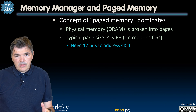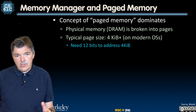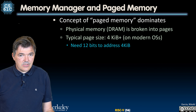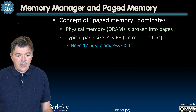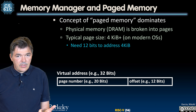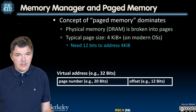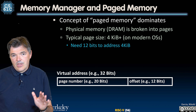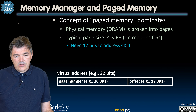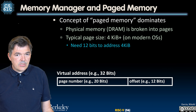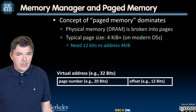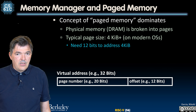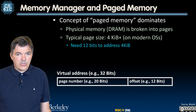Remember, RISC-V is a byte-addressable ISA, so every byte within the page should be addressable. How many bits do we need to address 4 kilobytes — 4096 bytes? We need 12 bits for that. So if you have a 32-bit address space, we split it into two parts in our virtual addresses. The lower 12 bits are used for addressing bytes within the page, and the upper 20 bits are the page numbers. This gives us 2 to the 20, or about a million pages, each with 4096 bytes.